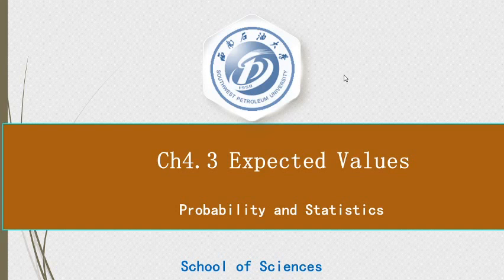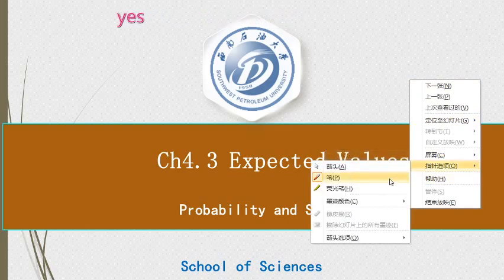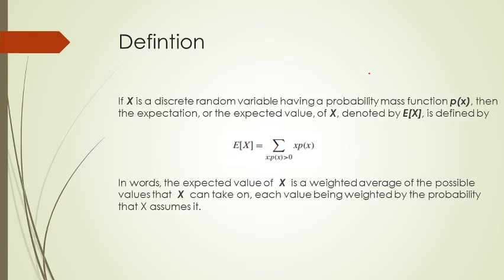After a short break, we will start section 4.3: Expected Values. The expected value is just the weighted average. In probability, we call it expectation — we use the terminology expectation.